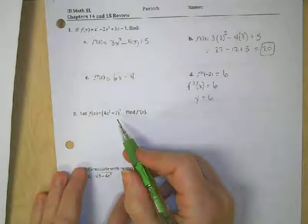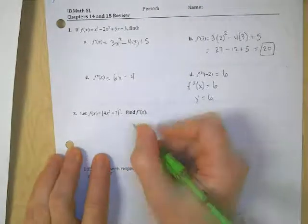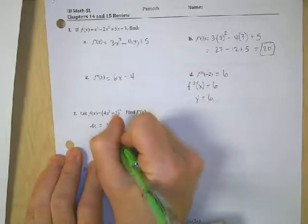We did this one in class. We did it on the warm-up. So, well, what the heck. Let's just do it again. Okay. u is equal to 4x squared plus 2.